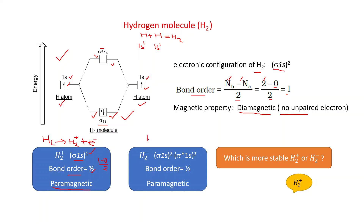When H₂ gains one electron, it converts into H₂⁻. Its electronic configuration is sigma 1s² sigma star 1s¹. Bond order = (2 − 1) / 2 = 0.5. There is one unpaired electron in the anti-bonding molecular orbital, so H₂⁻ is also paramagnetic in nature.